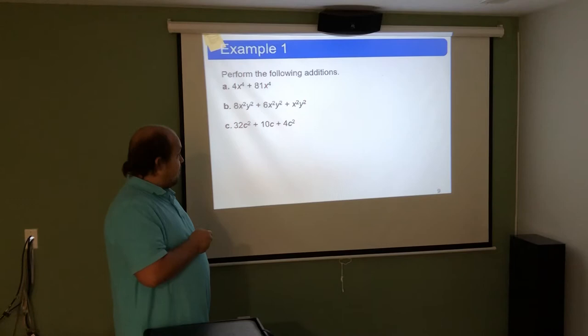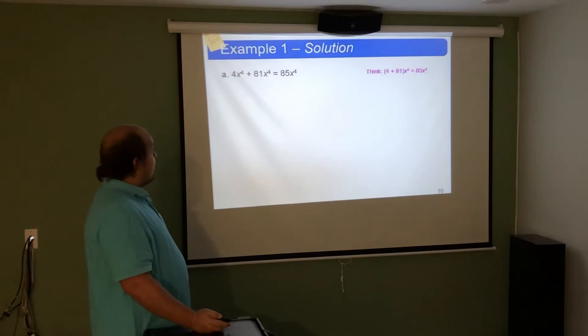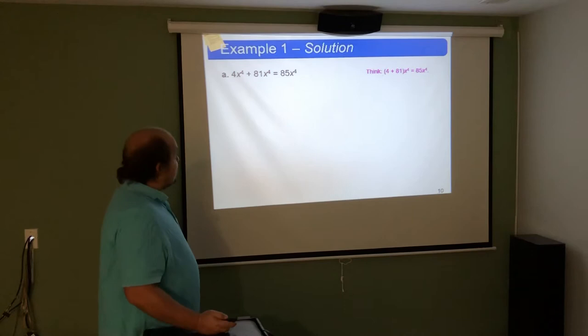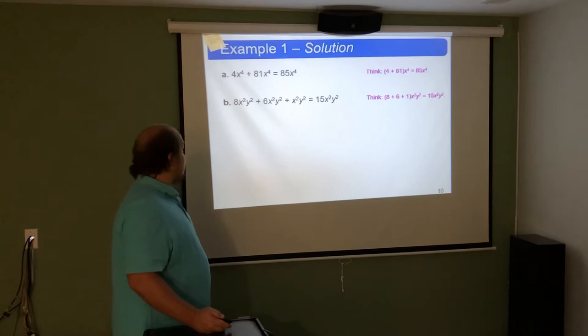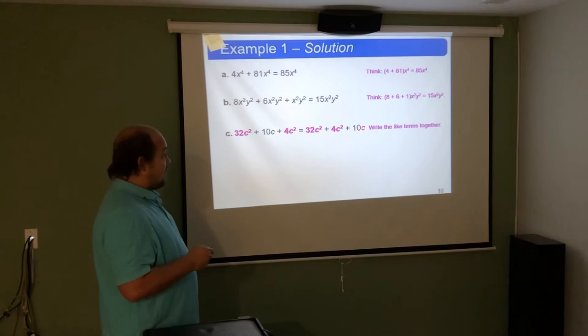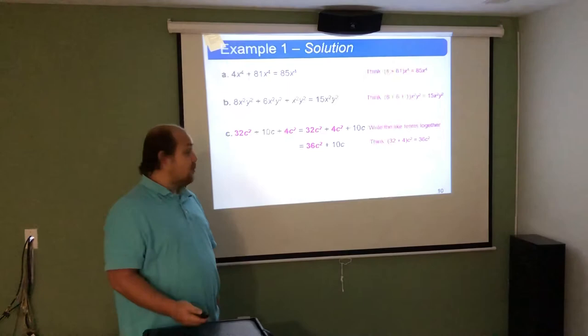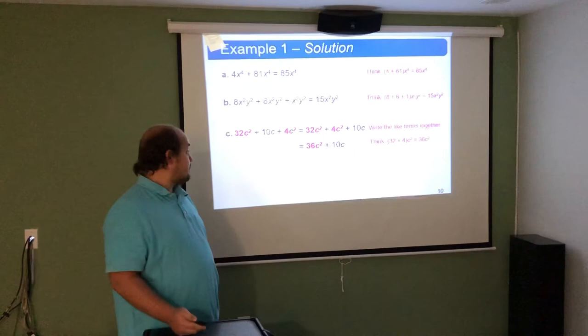For the final addition problem, 32c squared can be combined with 4c squared — 4 plus 32 is 36c squared — but the 10c must stay separate because it is only c to the first power, not c squared. Note that the 10c is not a like term, so the 4 and 32 combine to give 36c squared, but we must write plus 10c without combining it, since it's not a like term and must stay separate.